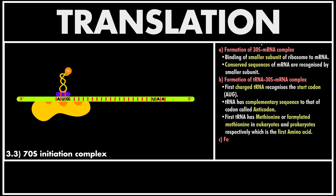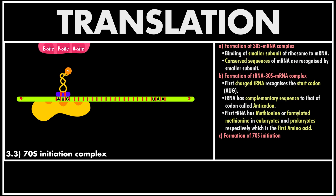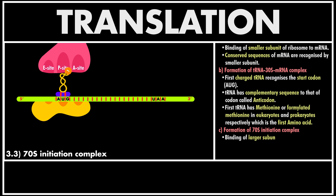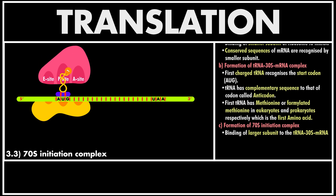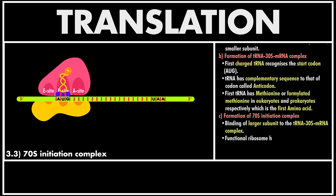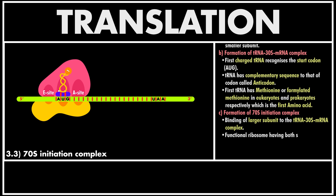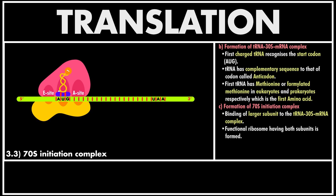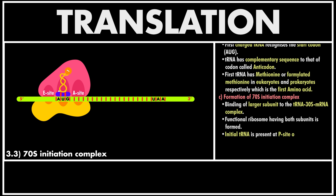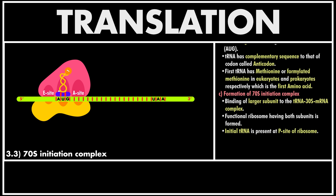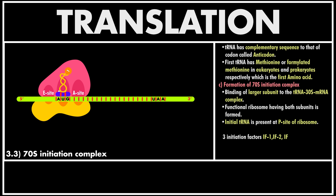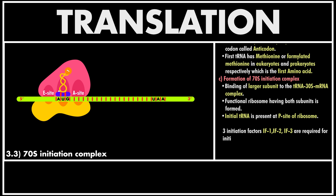Finally, the larger subunit of ribosome attaches to the 30S mRNA-tRNA complex and now it is called the 70S initiation complex. The larger subunit of ribosome has three sites: site A, site P, and site E. The initial tRNA is present at the P site, but the other tRNA enters the complex from the A site. Certain proteins called initiation factors are responsible for this step.